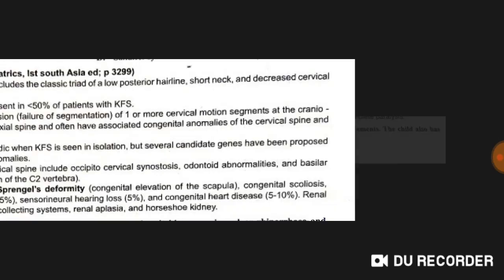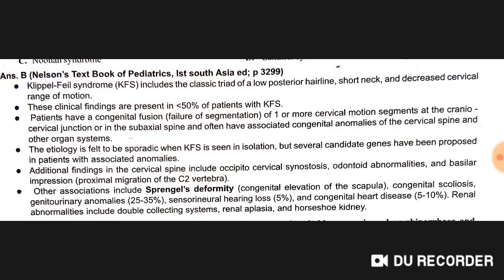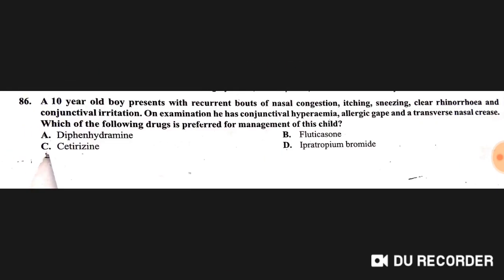A six-year-old boy presents with a short neck, low hairline, restriction of neck movements, Sprengel's anomaly, scoliosis, and fused cervical vertebrae. The most likely diagnosis is Klippel-Feil syndrome — option B is correct. The triad is: low posterior hairline, short neck, and decreased cervical range of motion.